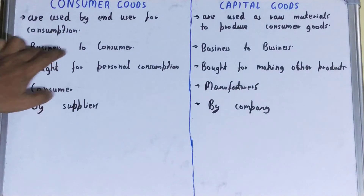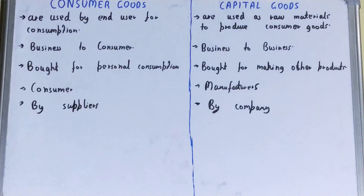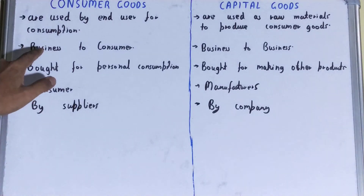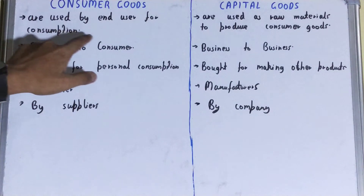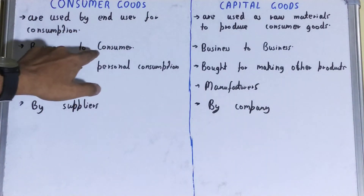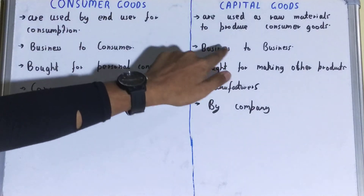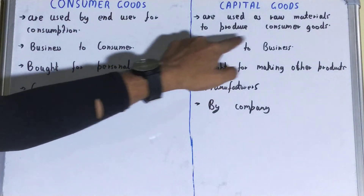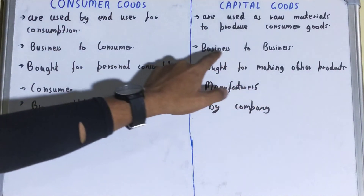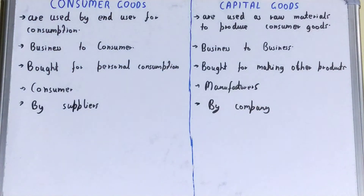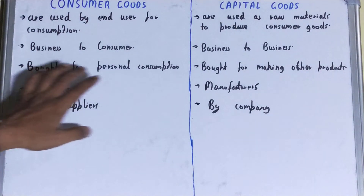Next, if we talk about marketing, then in the case of consumer goods the marketing is business-to-consumer — that is, from the seller to the end user. But in the case of capital goods, it is business-to-business — that is, from the company to the manufacturer.